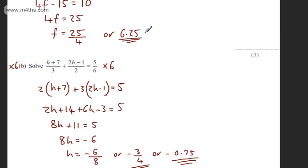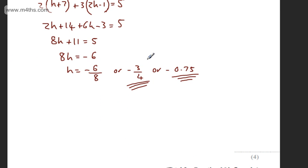So final answers for 3 marks, 6.25, and for 4 marks, minus 0.75.